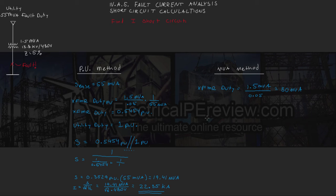And then next, we already know our utility duty is going to be equal to 55 MVA. And again, since these two are in series, we're actually going to add them together using the same method of adding resistance in parallel, which is the reciprocal of the reciprocal sums.